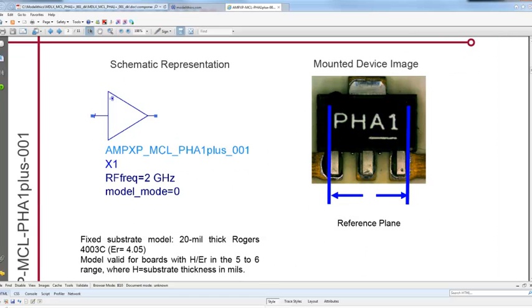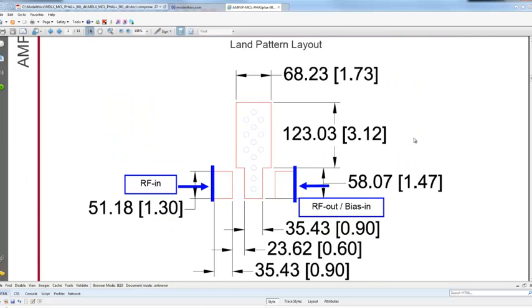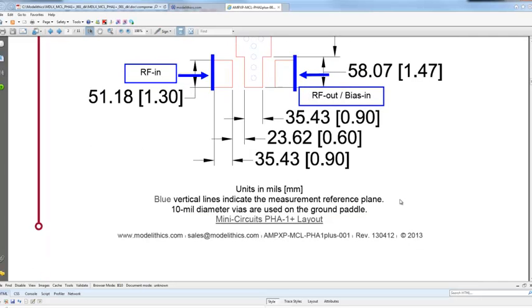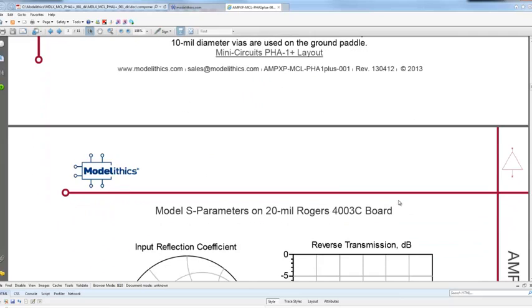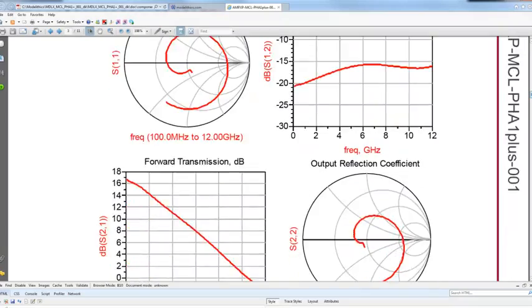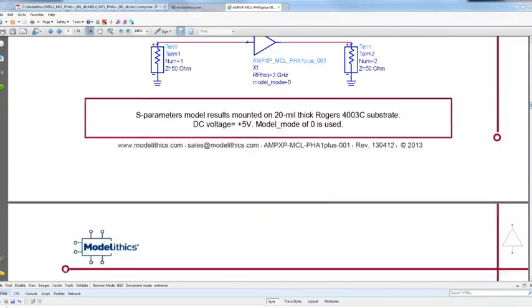Reference planes for the model are shown in the diagram on the second page. The landing pad or the test fixture layout detail, which is also included in a drawing format on the download data sheet as we talked about earlier, is shown.